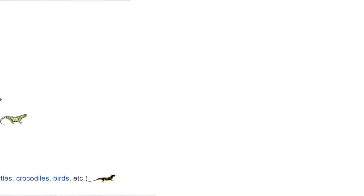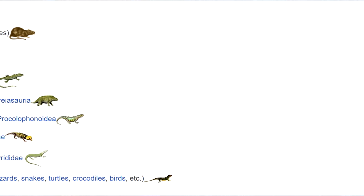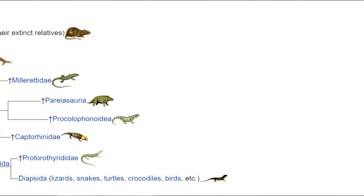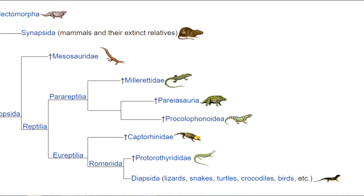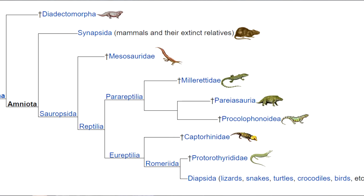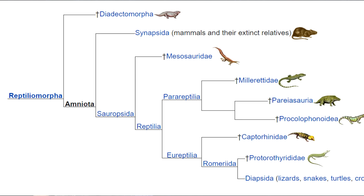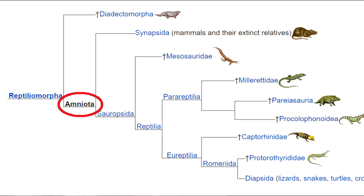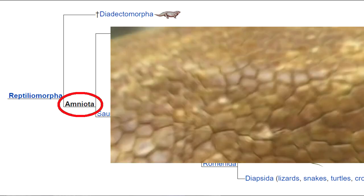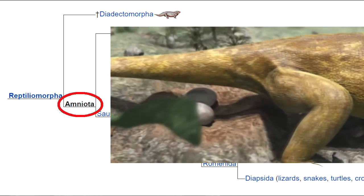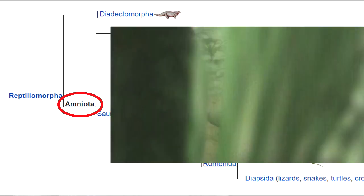Where we and they part ways — when what would become reptiles diverged from what would become mammals — was way back in the Carboniferous period, around 312 million years ago, when the first amniotes appeared in the fossil record as undifferentiated, initially amphibious reptiliomorphs. They were amphibious, but not amphibians. That's a different clade that also emerged at about the same time as an offshoot.